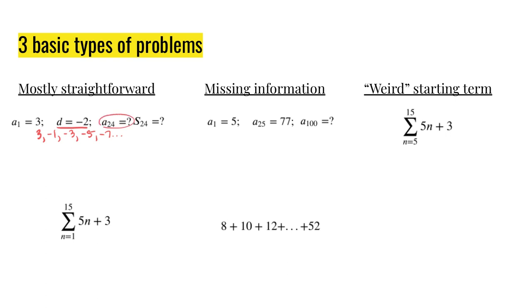In order to do that I'm going to go to my a sub n formula. And the a sub n formula says find a sub 1, add the difference times n minus 1. So right here we see n, right here we see the difference, and right here we see a sub 1. Those are the values that I've plugged into the formula. At this point it's very easy to just go ahead and simplify. So I've got 3 plus negative 2 times 23, which all simplifies down to negative 43.